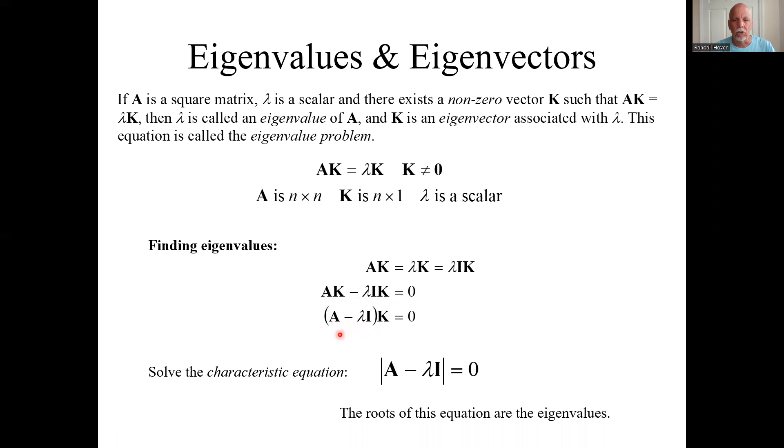Inserting that identity matrix allows me to do this arithmetic. So I can gather up the like terms, A minus lambda I, where I is the same size as A. If you look at this, K is a column vector, remember.